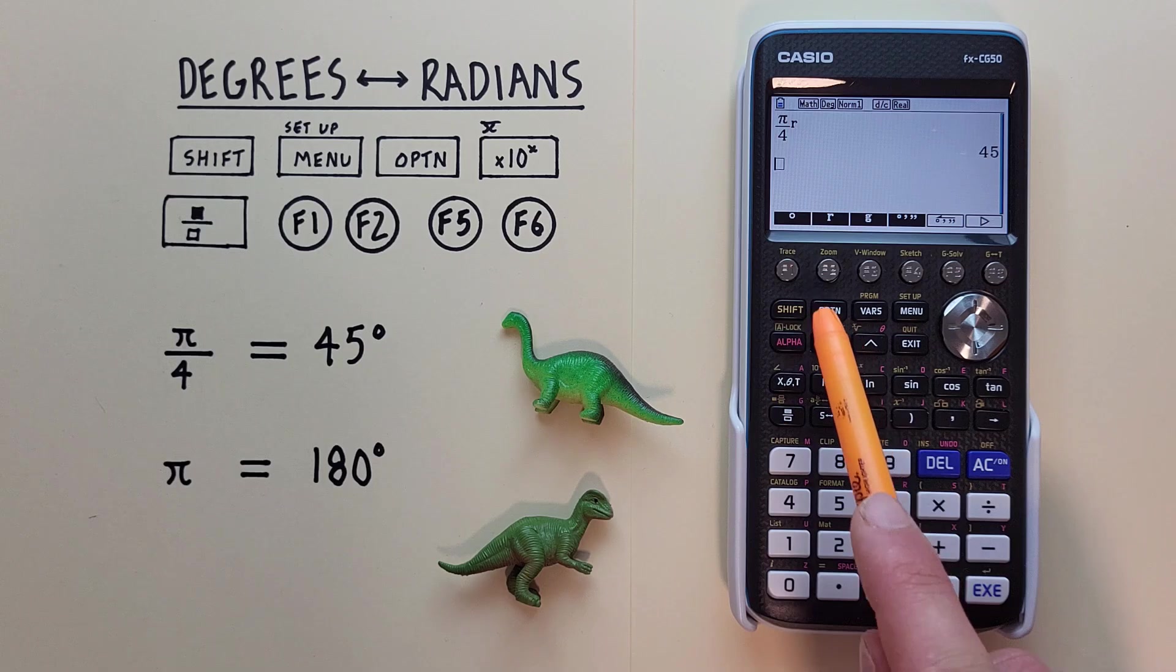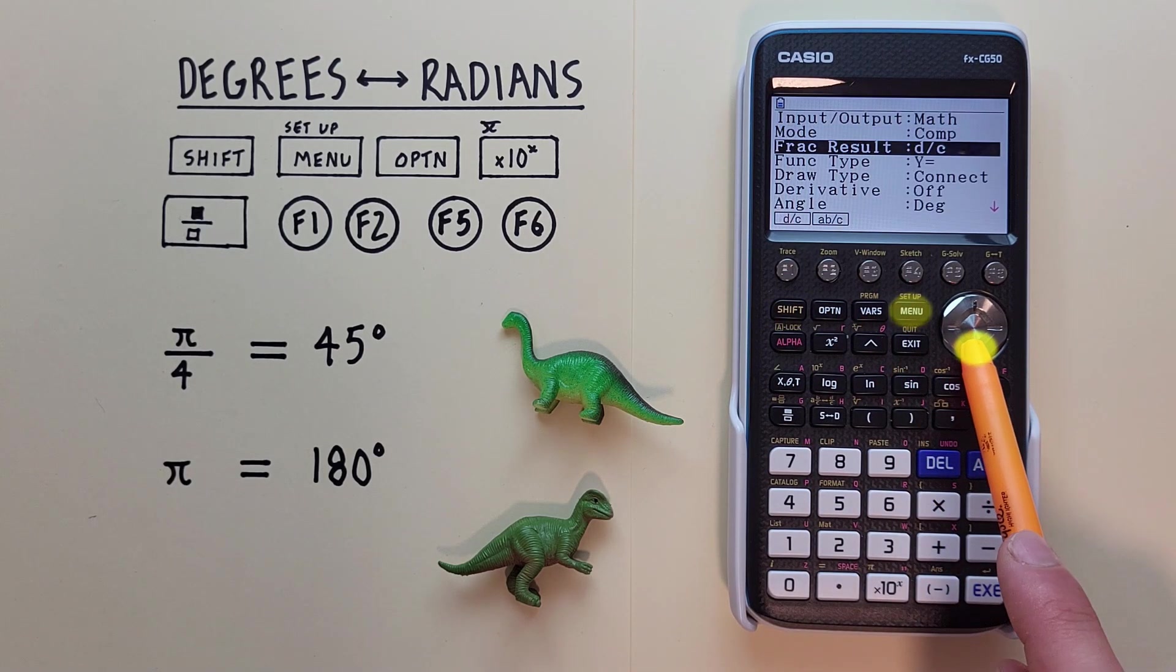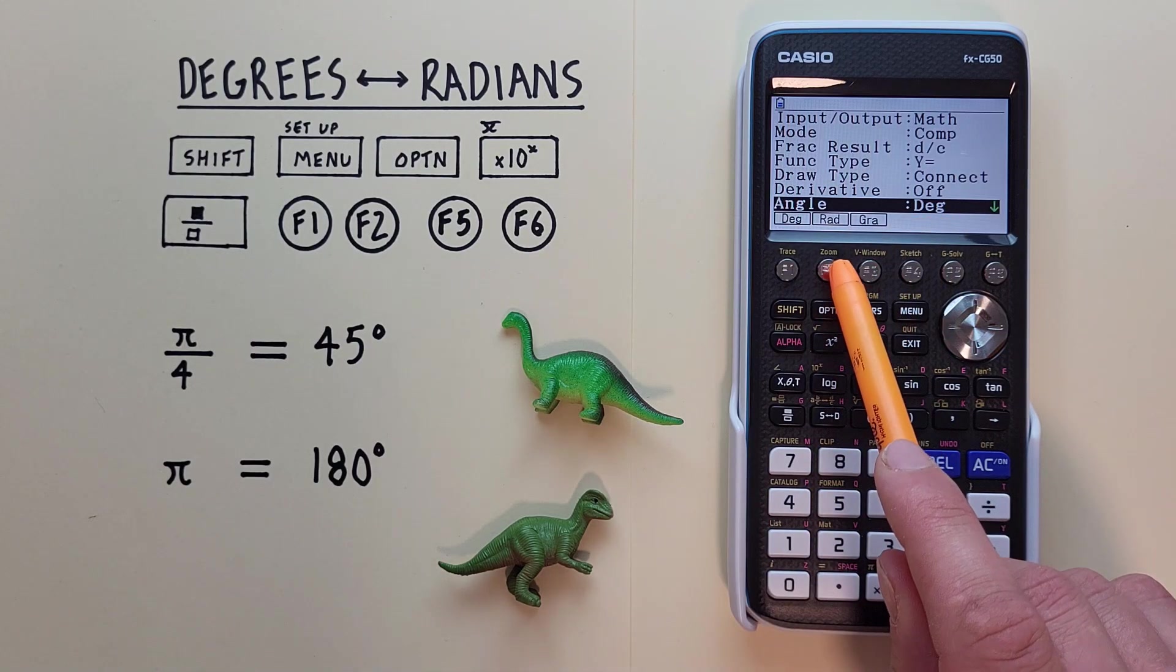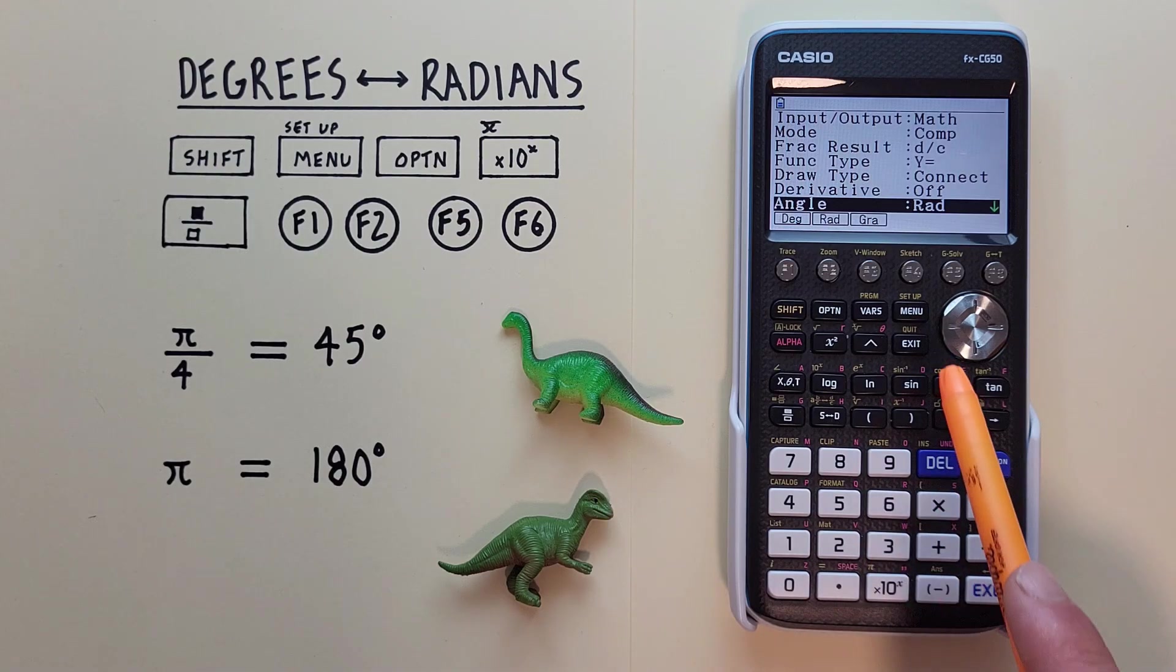So we start with the Shift menu, scroll down to DEG, and choose Rad or Radians. There we go. Now we can exit this.